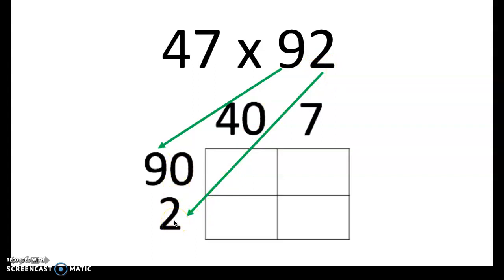Something that I really encourage our 5th graders to do to double check that they set up their box correctly is that they can simply add these two numbers together, 40 plus 7 is 47, add the other number together, 90 plus 2 is 92, to make sure that they have accurate partial numbers over here, our 10s and our 1s.